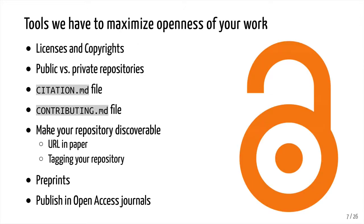The punchline here is that science done in the open has a bigger impact. Studies show that open papers are better cited, easier for others to build upon, and it builds transparency — a critical component of reproducible research. We have a variety of tools to maximize the openness of our work: licenses and copyrights, public versus private repositories on GitHub, citation and contributing files, making repositories more discoverable, posting manuscripts as preprints, and publishing in open access journals.